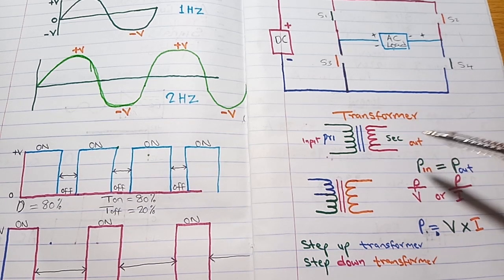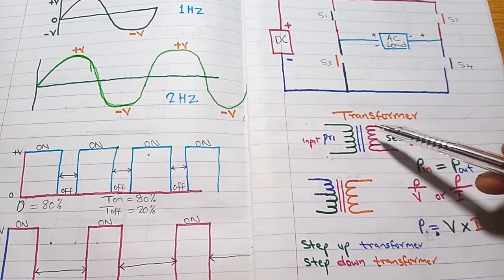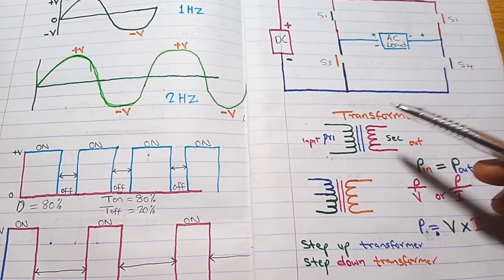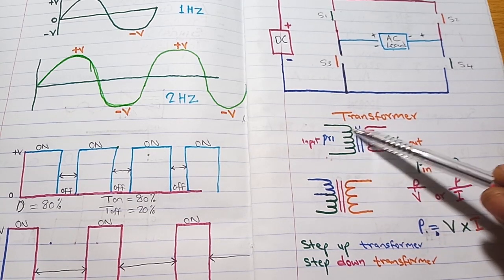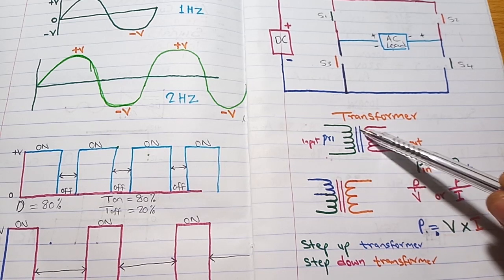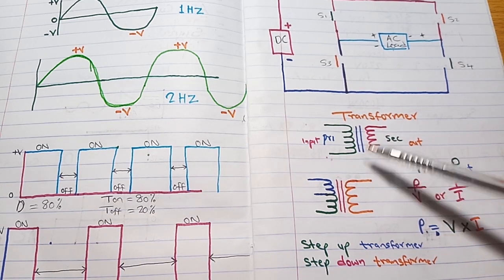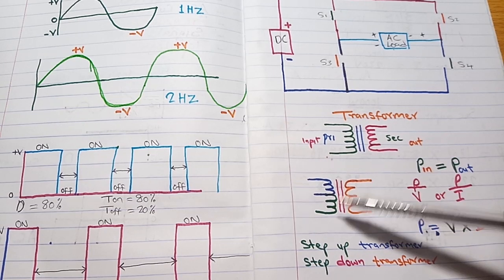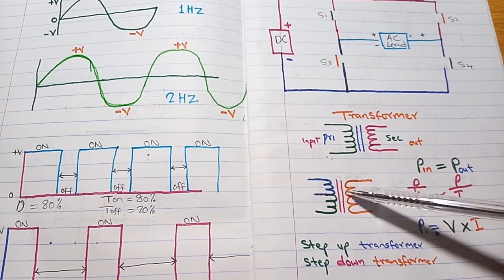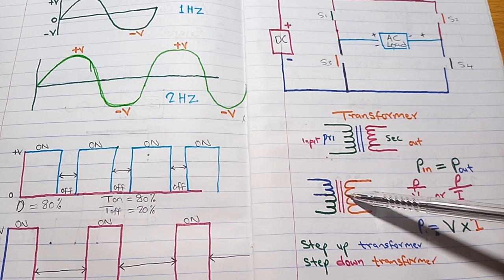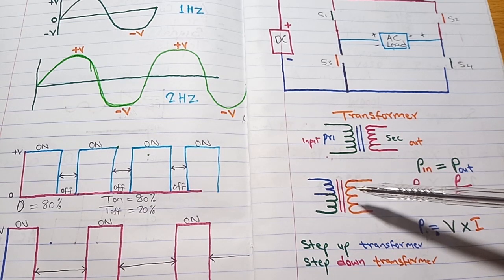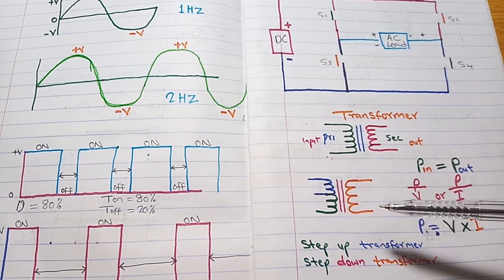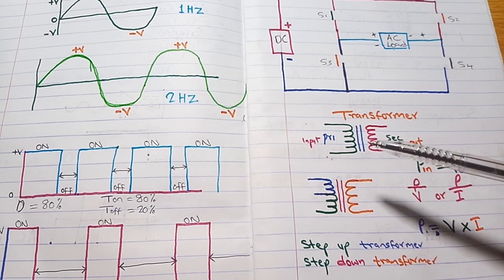The place you use as your output will be your secondary. We have two types of transformer windings: the center-tapped one and the normal full-bridge one. Whenever we make use of the center tap, we go into what we call push-pull topology. That will be the first topology we are going to look at.